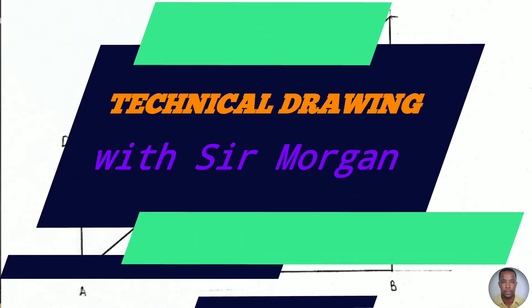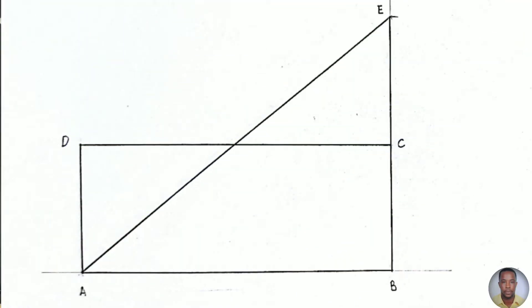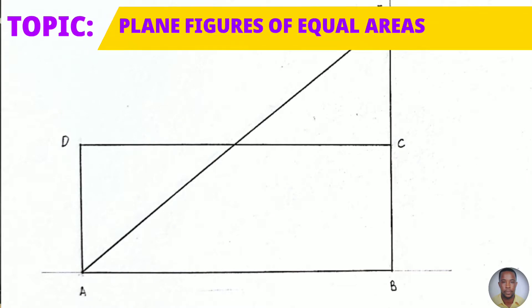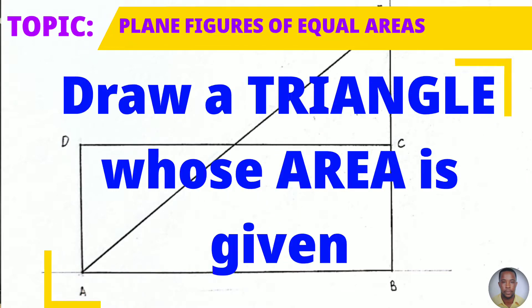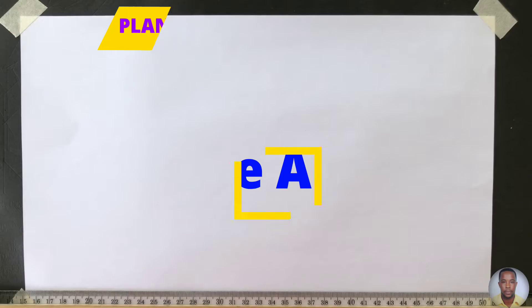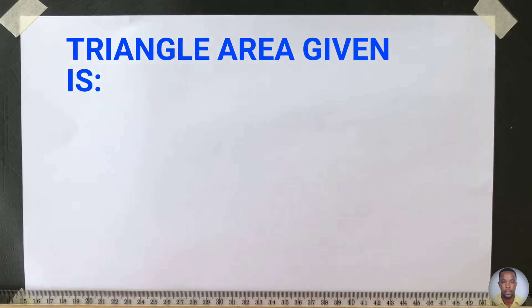Greetings everyone, Sir Morgan here from the technical department. Today's topic is plane figures of equal areas. I'll be showing you how to draw a triangle whose area is given. The area of the given triangle is 4000 millimeters squared.